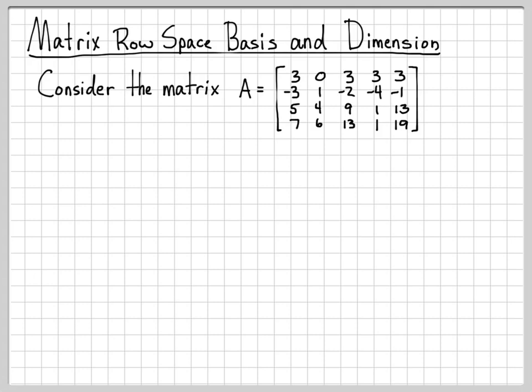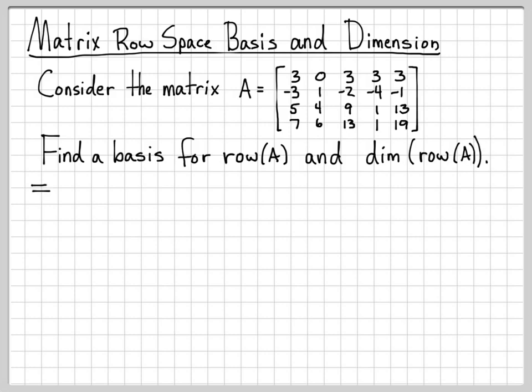So how are we going to find a basis for that space? How many different ways can I take linear combinations of these rows, and where does that put me? Does that put me in a five-dimensional space, in a two-dimensional space? What type of space am I working on? We're going to find the row space of A and the size of that row space.